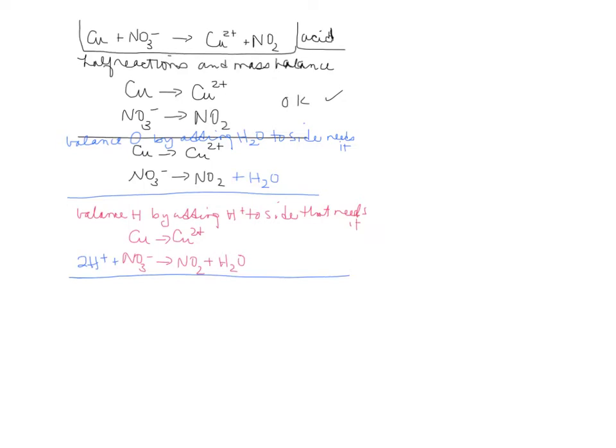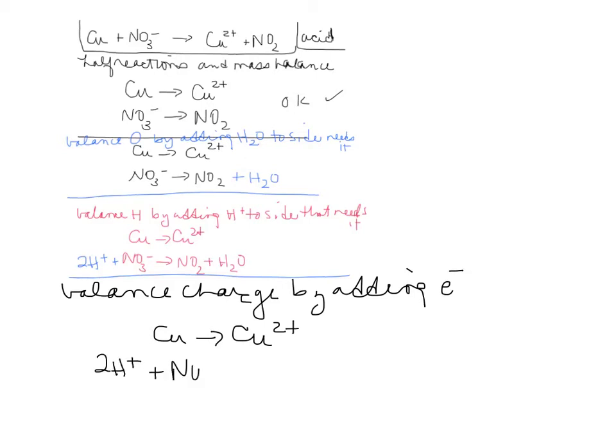All right, then the next step will be to balance the charge by adding electrons to the side that needs it. We're going to write copper forms copper 2 plus, and 2H plus plus NO3 minus forms NO2, and a reminder to not forget to put your charges in. It's real important. All right, the right-hand side of the copper half reaction is 2 plus, so we're going to add two electrons to that, so now it's neutral, zero on both sides. For the second half reaction, that's a little tricky. You've got two positives and one negative for an overall plus 1, so we're going to add one electron to the left-hand side, and that should do it.